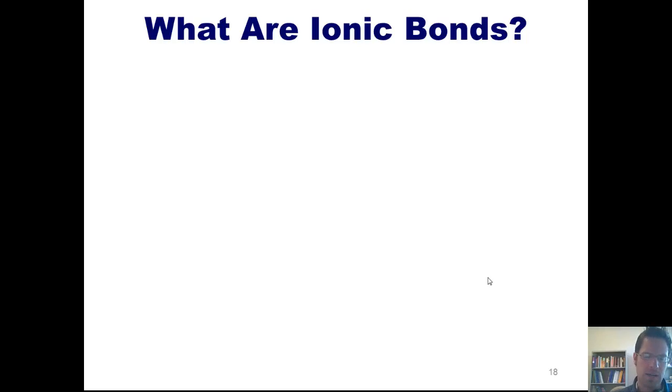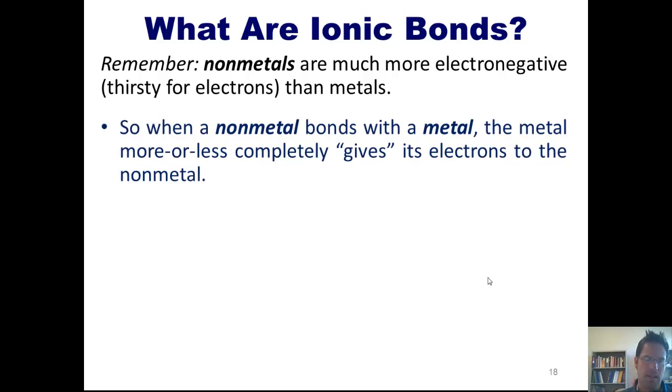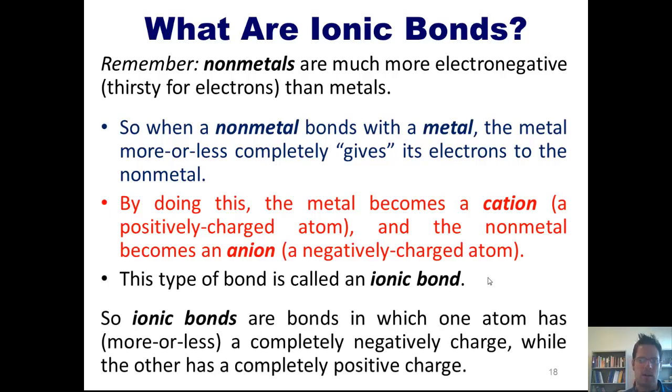To do so, we have to remember that nonmetals are much more electronegative, that is, thirsty for electrons, than metals are. So when a nonmetal bonds with a metal, the metal more or less completely gives its electrons to the nonmetal. By doing this, the metal becomes a cation, which is a positively charged atom. And the nonmetal becomes an anion, which is a negatively charged atom. This type of bond is called an ionic bond. So ionic bonds are bonds in which one atom has more or less completely negative charge, while the other has a completely positive charge.